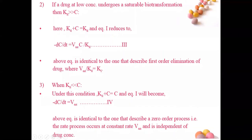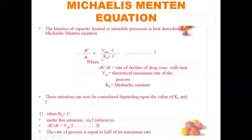Situation 3: when Km is much less than C. In the denominator Km + C, the Km term is negligible, so the equation becomes: −dC/dt = (Vmax × C) / C. The C terms cancel, giving: −dC/dt = Vmax. This describes a zero-order process where the rate occurs at the constant rate Vmax, independent of drug concentration.